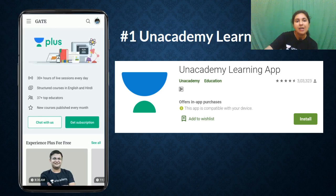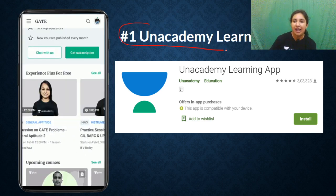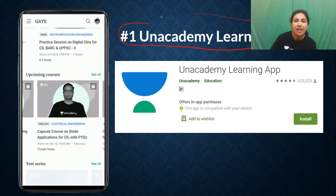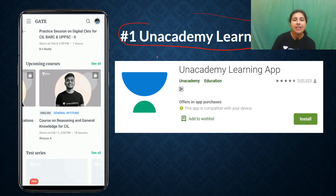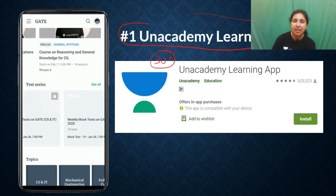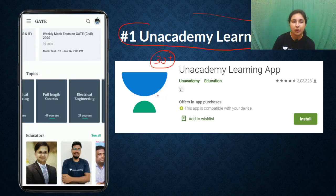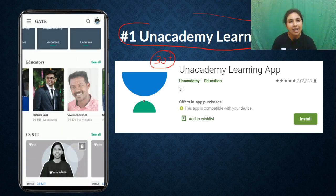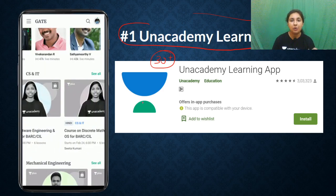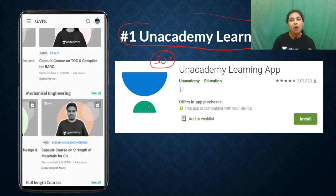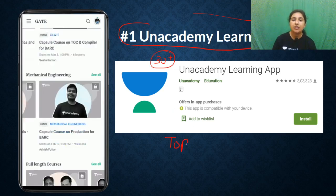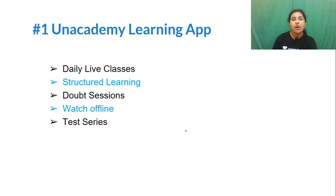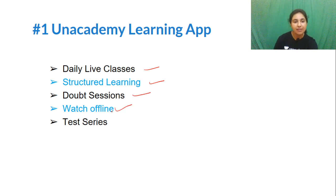The number 1 app is Unacademy Learning App. This is a complete knowledge platform where you can prepare for 30-plus competitive exams — whether you are preparing for engineering exams, SSC, state engineering services, GATE, banking exams, or CGL exams. All top educators are available here. This is the best app for your preparation.